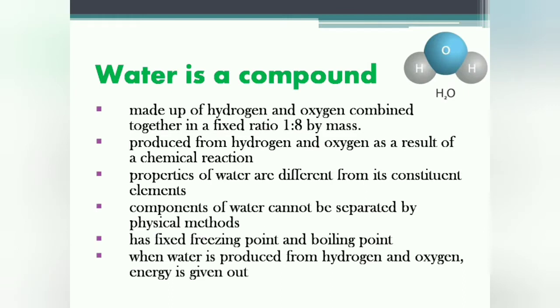Water is a compound and it is called so because it shows all the characteristics of a compound. Let's have a look at these characteristics. Number one: as compound is a substance made up of two or more different kinds of elements combined together in a fixed ratio by mass, and water is also made up of hydrogen and oxygen, both are different elements and these are combined together in fixed ratio that is 1:8 by mass.